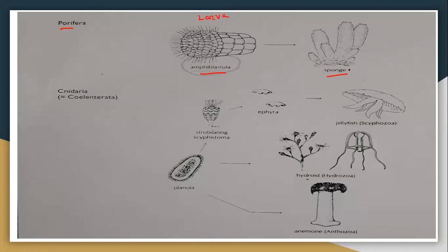In case of cnidaria, the larval stages are the ephyra larva and the planula larva. The ephyra larva leads to jellyfish and belongs to Scyphozoa. The planula larva belongs to Hydrozoa and sea anemones of Anthozoa.